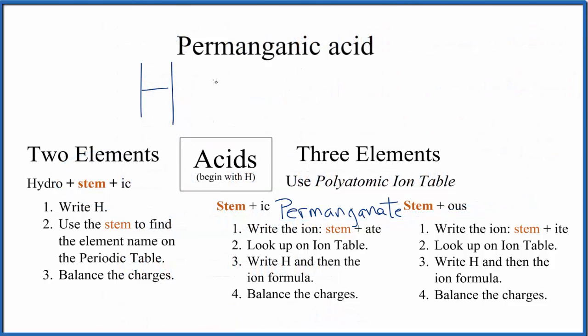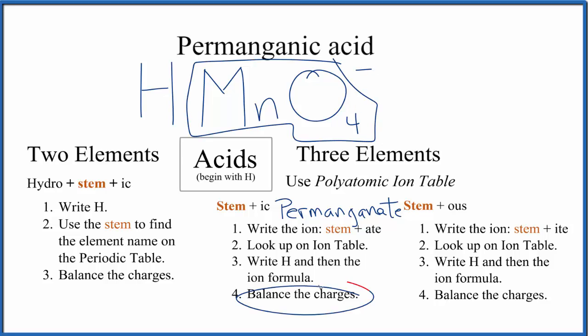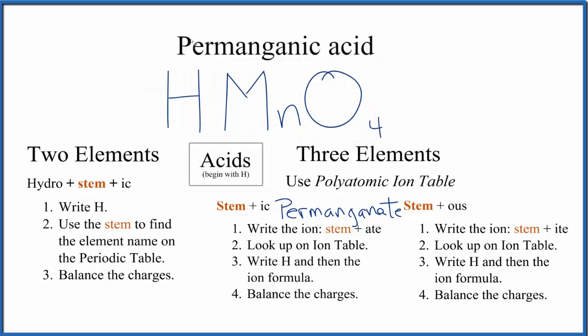So we have a negative here. Now we need to balance the charges. Hydrogen is group one, so that's going to be one plus. Plus and minus balances out, so this is the formula for permanganic acid: HMnO4.